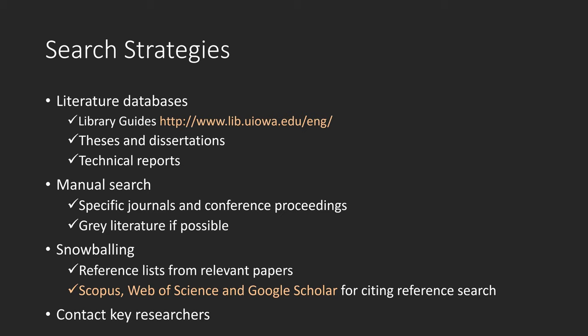Manual searching can be very time consuming, especially when the topic of a review is broad or the topic is quite neutral. Grey literature is optional. Grey literature refers to non-commercial publications or materials that are produced on all levels of government, academics, business, and industry in print and electronic formats. Snowballing is also a good strategy. There are two directions: you can check citing references and cited references.